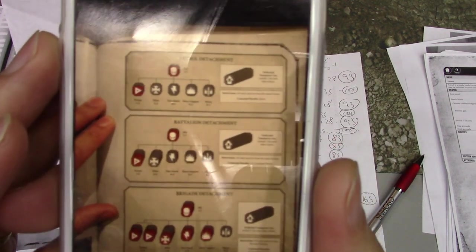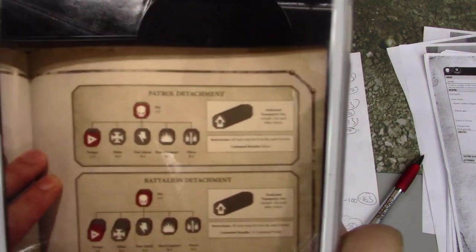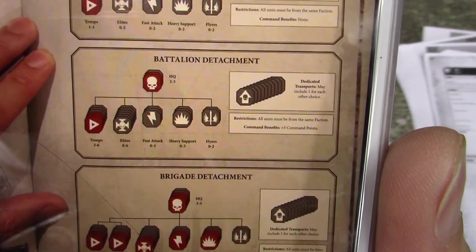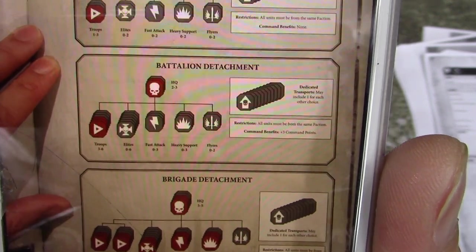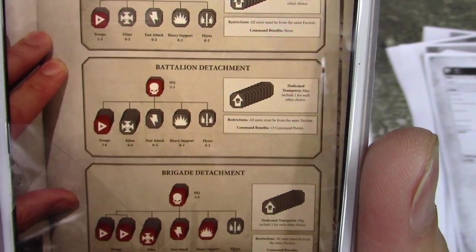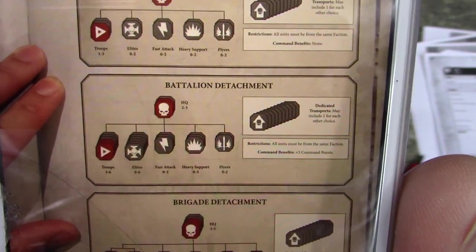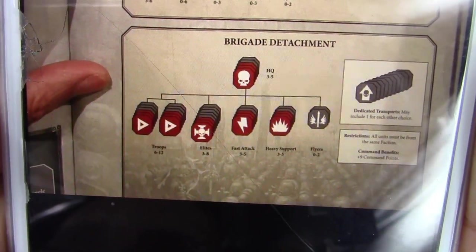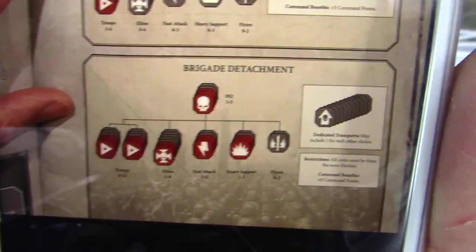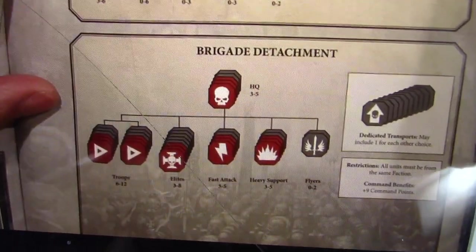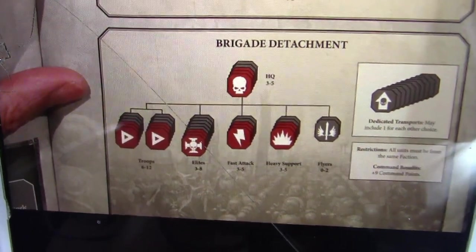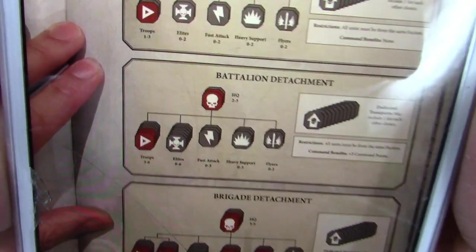So now what we need is HQs. How many HQs do we need? Let's look at the detachments here. These are the various detachments you can use. Starting from the basic one, the patrol detachment, which gives you no bonus command points - just an HQ and one to three troops. Then you have the battalion detachment, which is probably the most common one at 2,000 points. Two or three HQs, three to six troops, and all the other ones optional. You get three command points for that. Your good starting point for a balanced army is to start with a battalion.